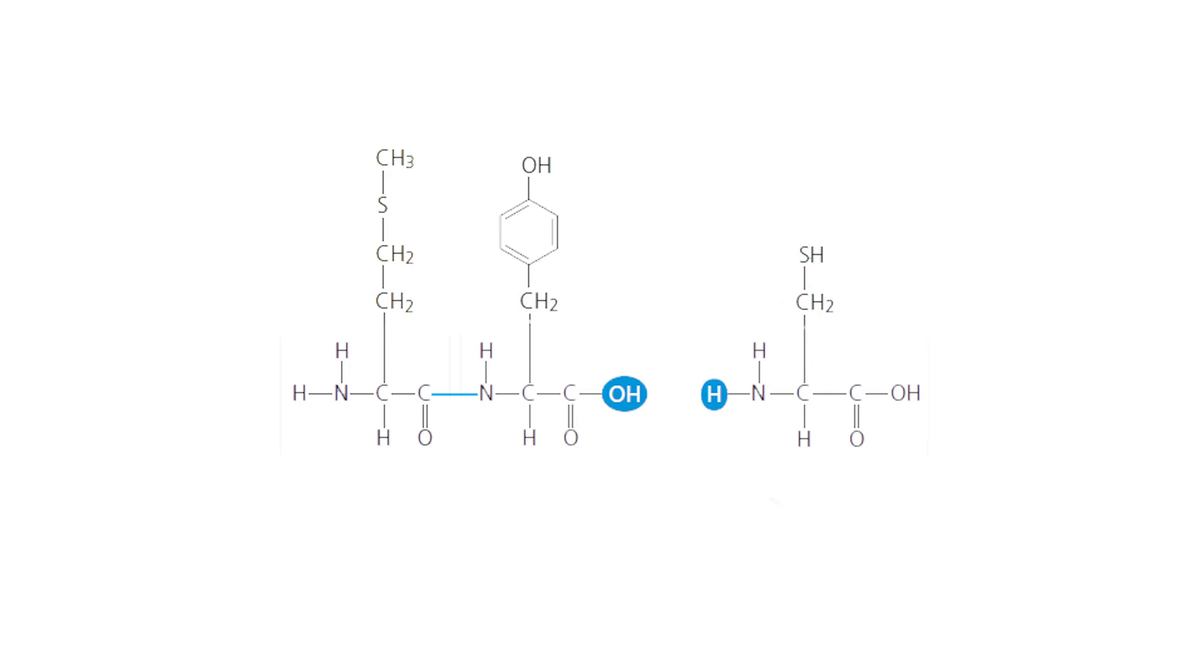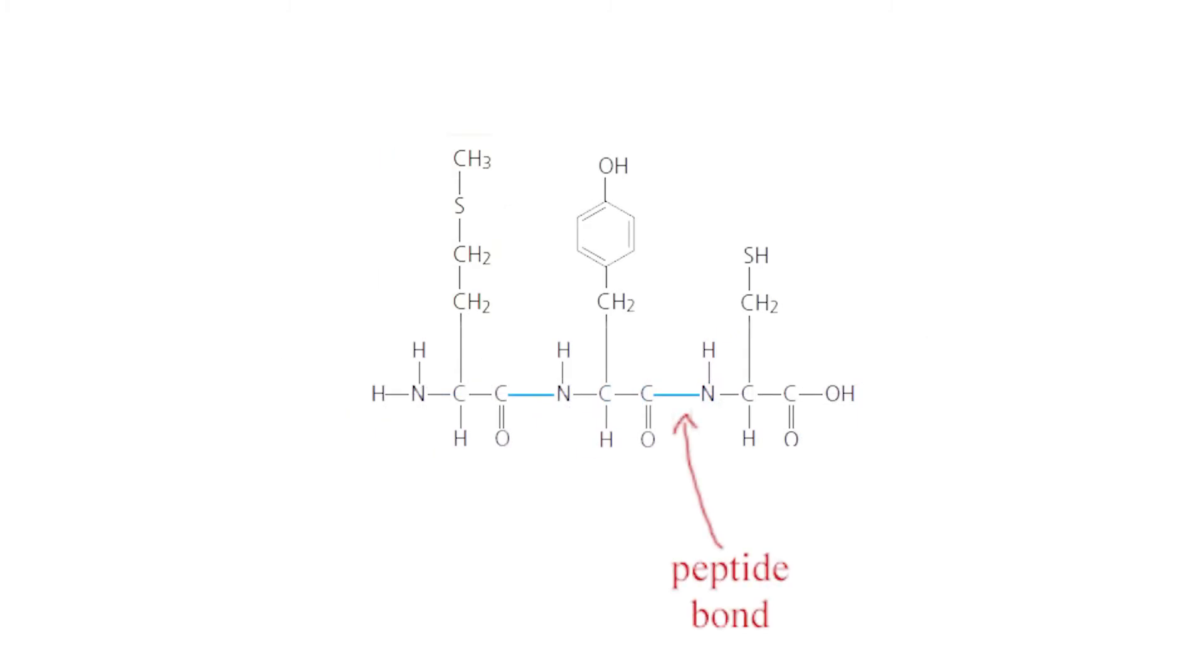the hydroxyl on an amino acid's carboxyl group combines with a hydrogen on another amino group to form water. This water molecule is released, creating a peptide bond linking these amino acids together. This process is called dehydration synthesis.